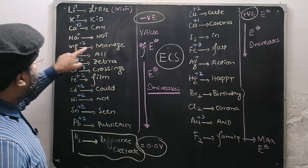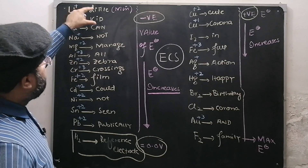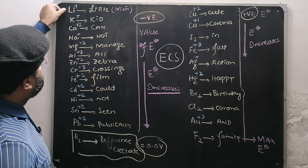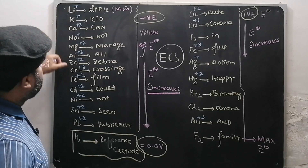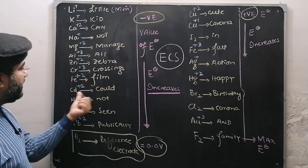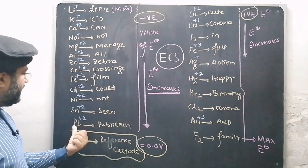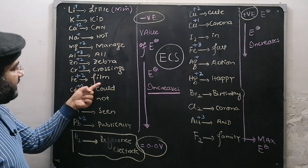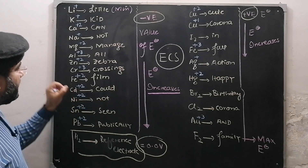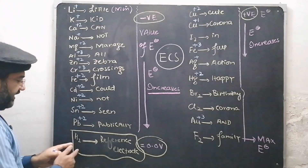The first element is lithium, having the minimum value of standard reduction potential. Then potassium, calcium, sodium, magnesium, aluminum, zinc, and chromium. From lithium to chromium, I have made the sentence: 'Little kid cannot manage all zebra crossings.' This sentence will help you memorize the sequence of elements from lithium to chromium.